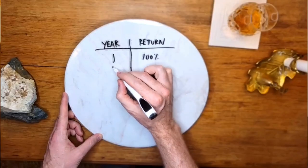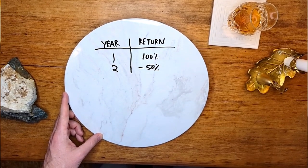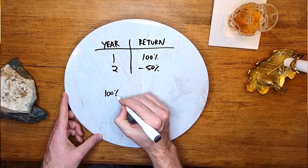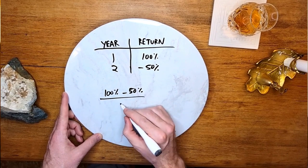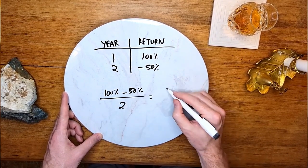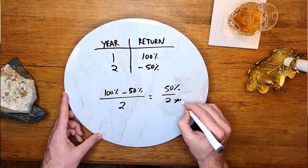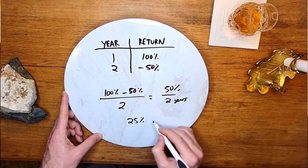The simplest example to illustrate this point is a fund that is two years old. In year one, the fund returns a staggering 100%. Then in year two, the fund loses 50%. When we calculate the average annual return, we do 100% minus 50%, that gives us 50%, then divide by two years — we get an average annual return of 25%. That sounds amazing, right? You can probably see where I'm going with this.